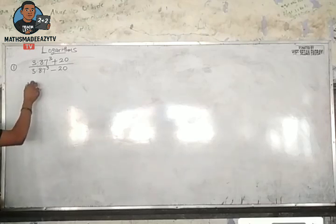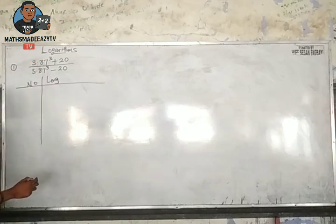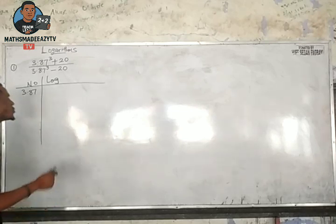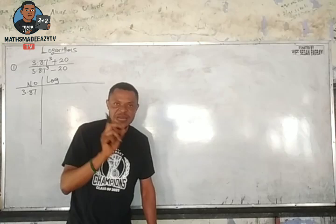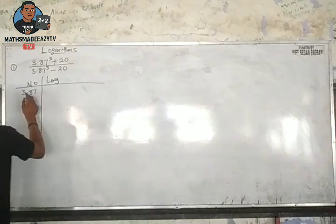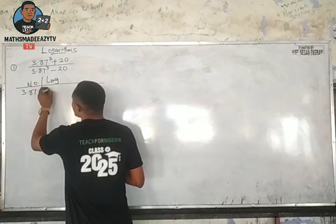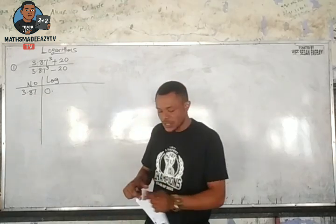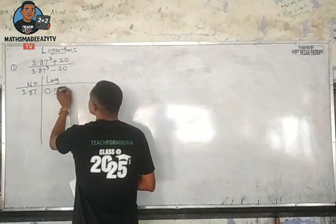We start from the number we have in the table and the log. Here, 3.87. So having 3.87, the characteristic of three is going to result to zero because this is just one integer and one minus one will result to zero. Or if you choose to move the decimal point to the left, you start from zero and it results to zero point. Then we check from the log table, 38 under 7. 38 under 7 will result to 5877.